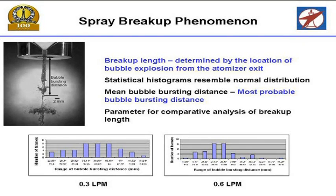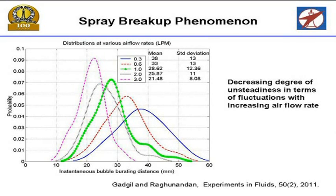You can now quantify this phenomenon: you can describe it in terms of the mean bubble bursting distance and the most probable location where the bubble is likely to break. You can also quantify it in terms of standard deviation. If you convert the same data into a probability distribution function, you find what is plotted for different flow rates: the mean distance keeps on decreasing as the flow rate is increased, and the spread becomes narrower and narrower.